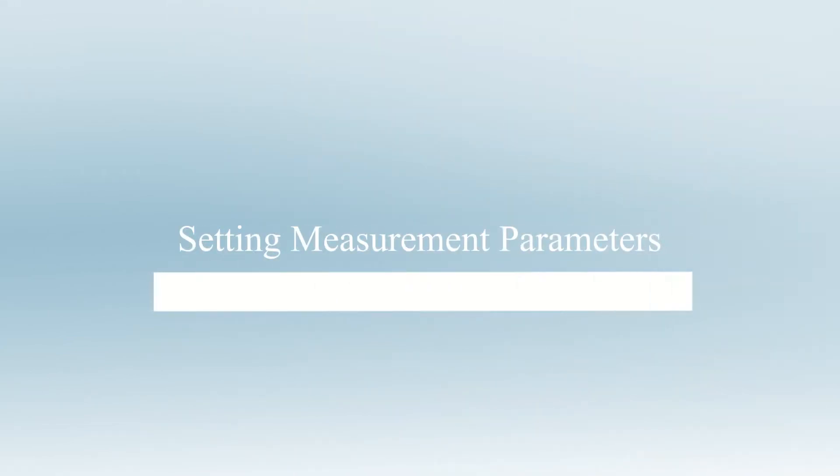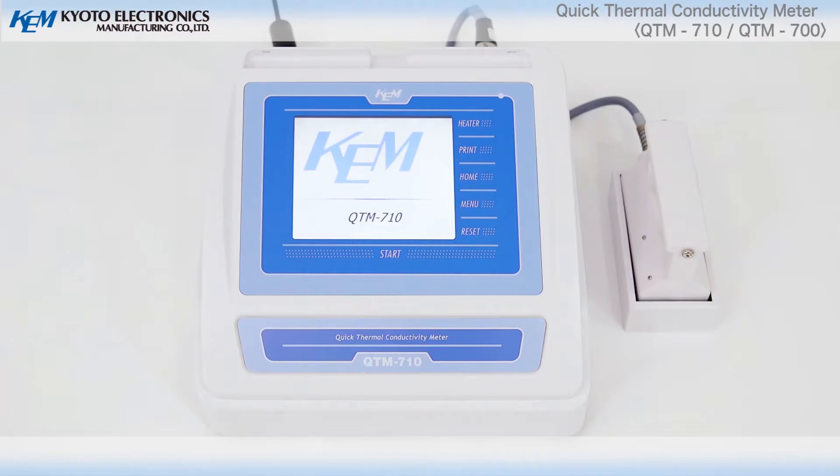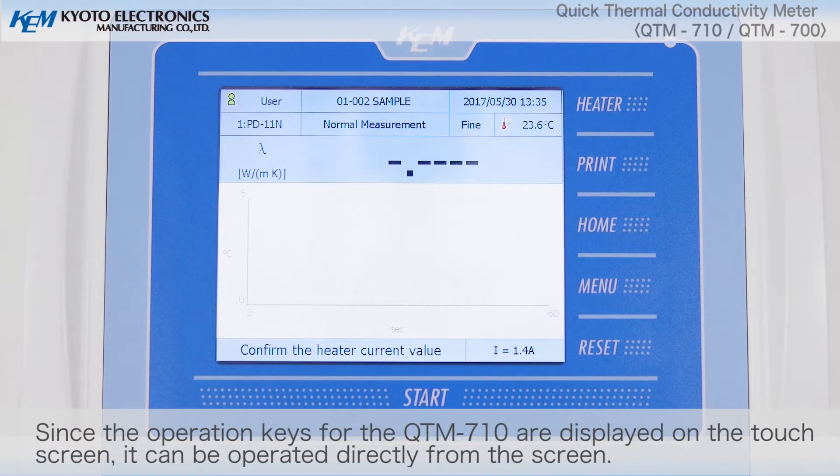Setting measurement parameters. Since the operation keys for the QTM 710 are displayed on the touch screen, it can be operated directly from the screen.